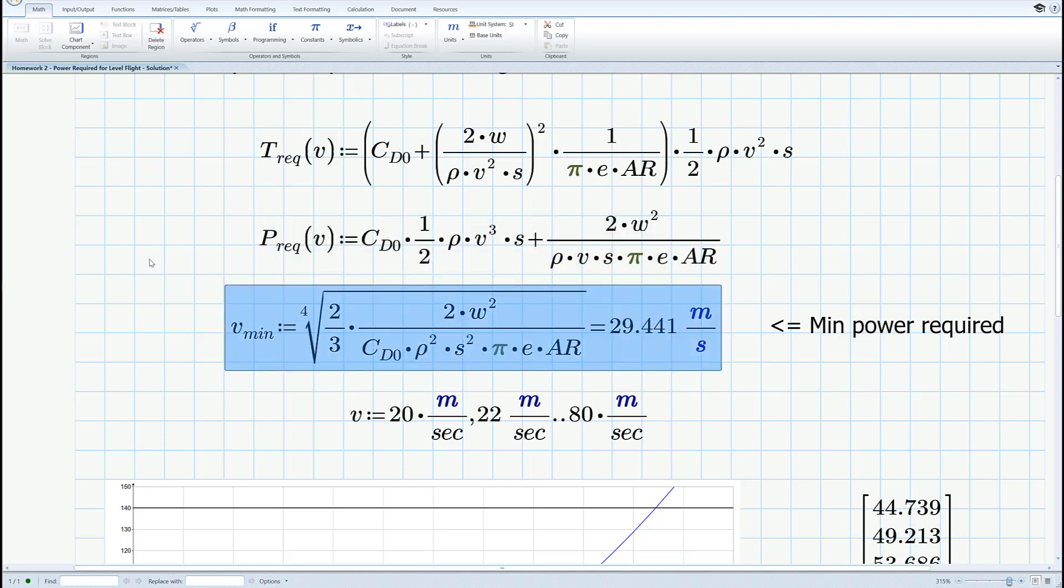Now to get to power required right there I just multiplied through by velocity and did a little algebra. This doesn't look exactly like the equation I had on the board but it is. Now for minimum power required I set the derivative of power required equal to 0 and solve for V min.